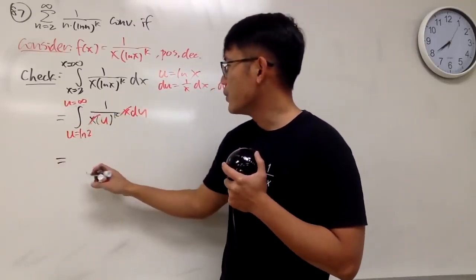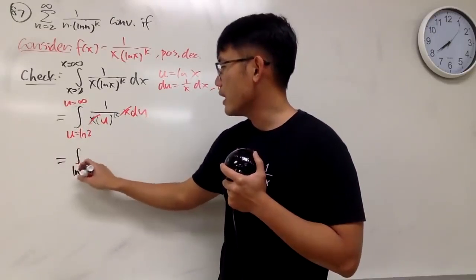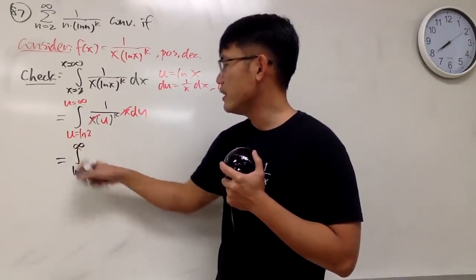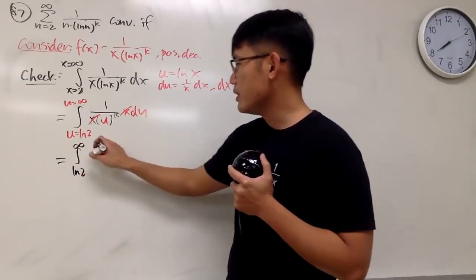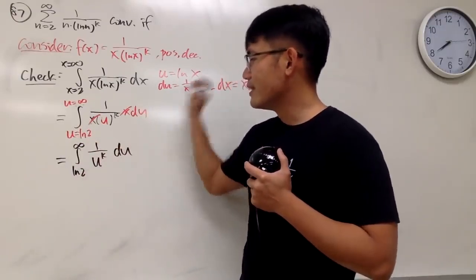So in this case, you will see that we actually just get the integral from ln 2 to infinity in the u world, and we have actually 1 over u to the k's power du.